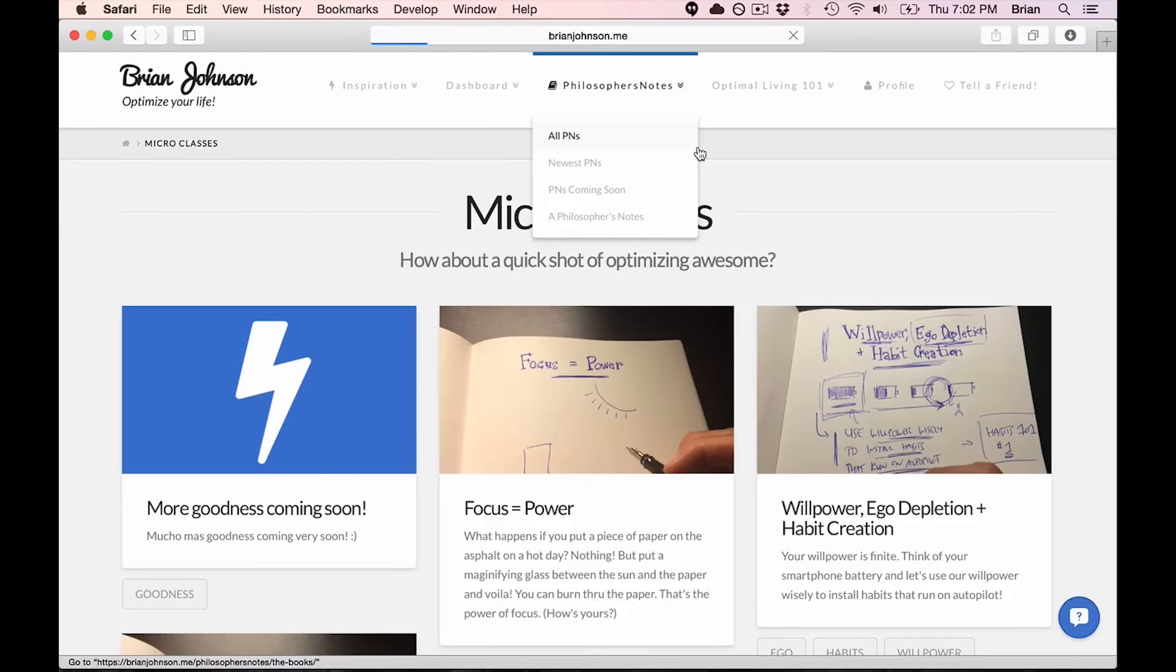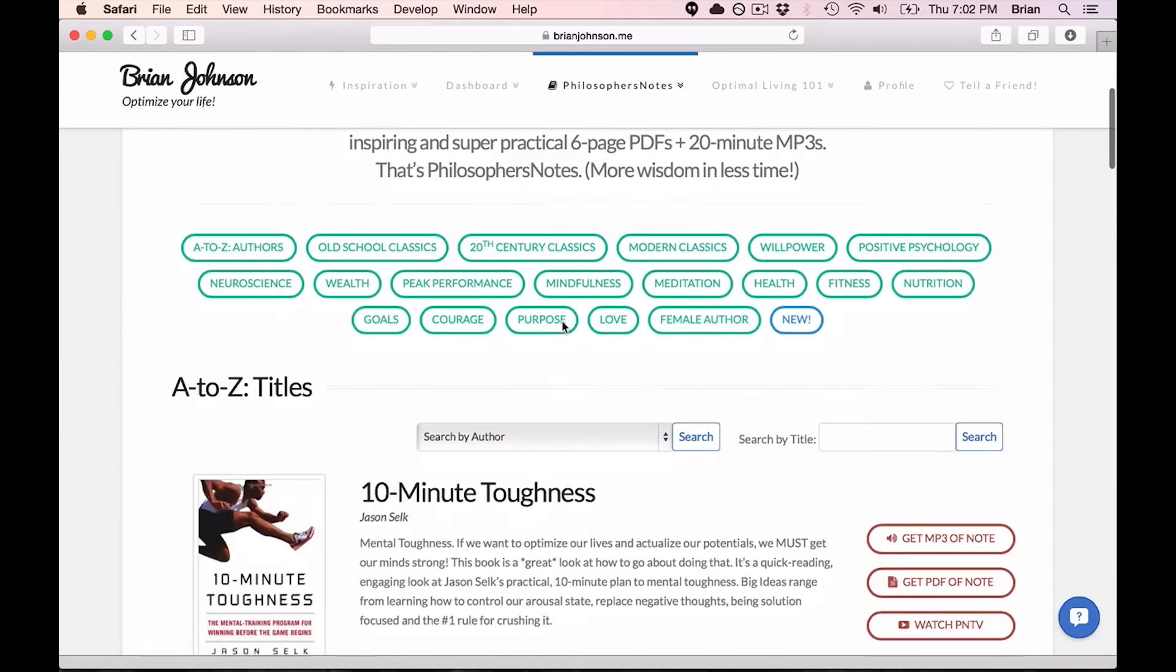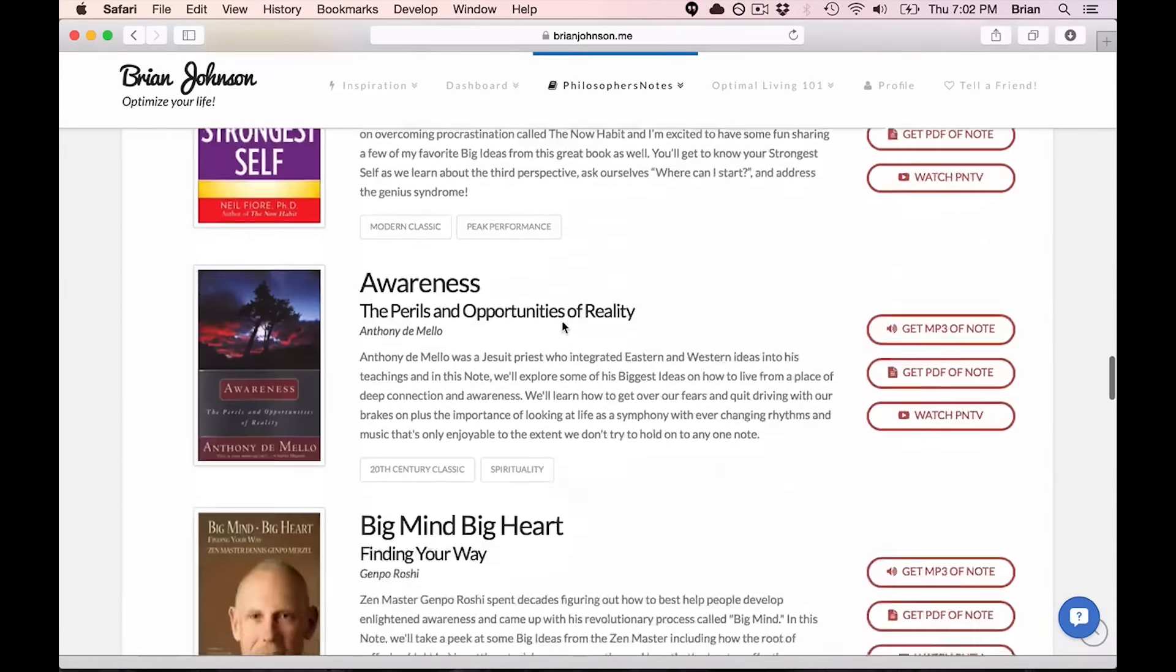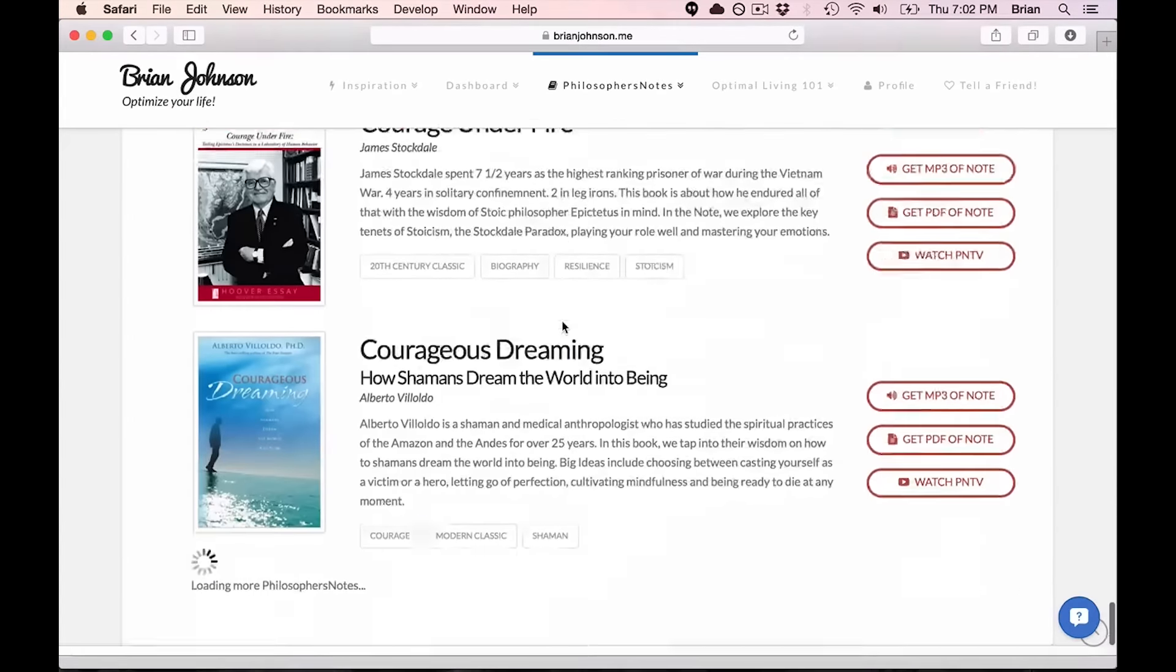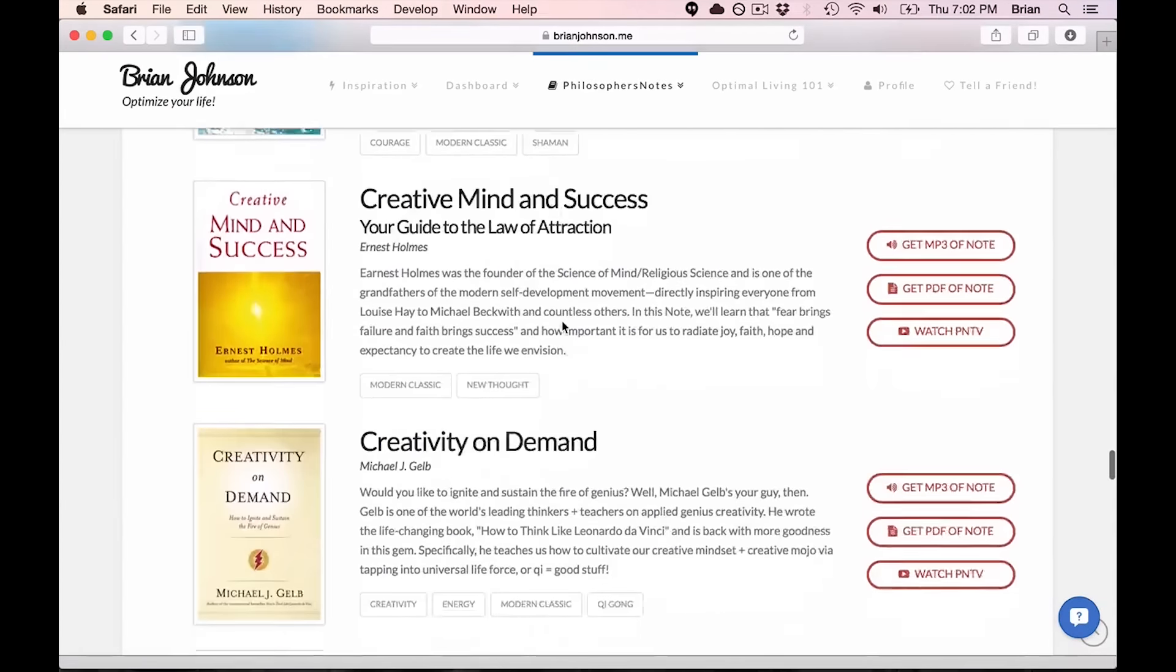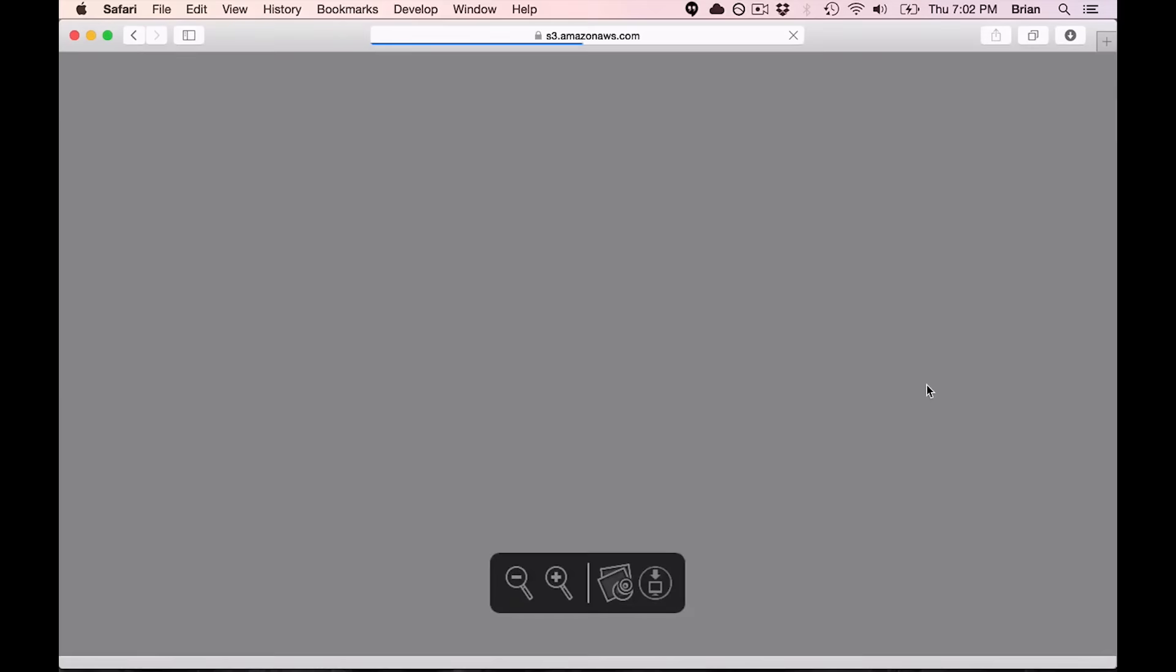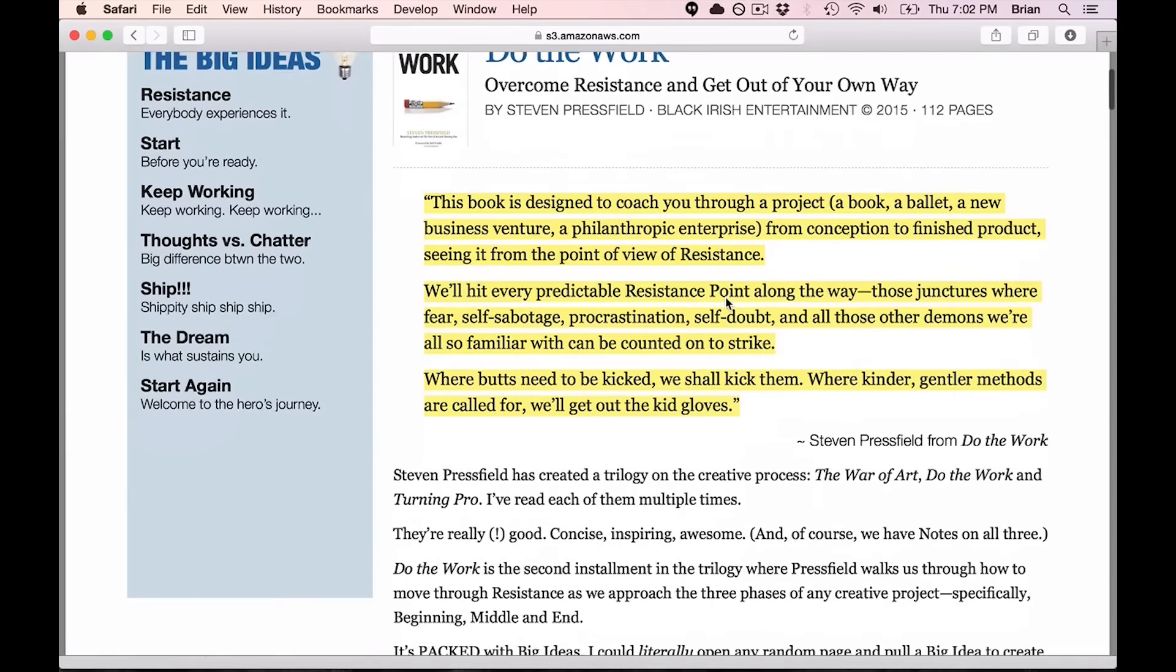you get access to every single one of our philosopher's notes. We now have over 250 philosopher's notes on some really, really good books. A lot of them. In each one of them, you're familiar with the PNTV videos if you've watched many of those. But we also have PDFs and MP3s of our philosopher's notes. So let's take a look at what a PDF looks like. This is an example of a philosopher's note.